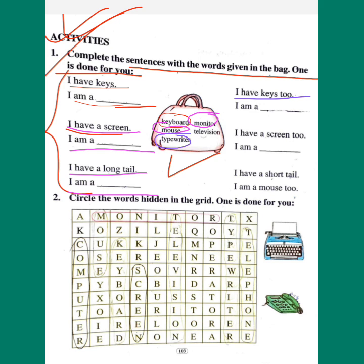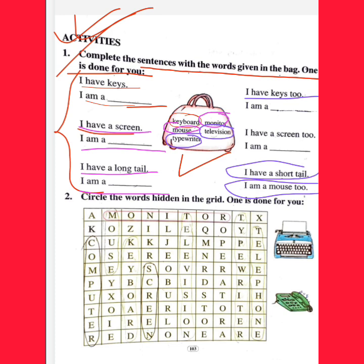Next, I have a screen. This is a television. It is number two — circle the words hidden in the grid.